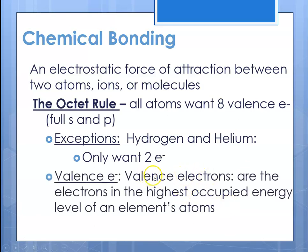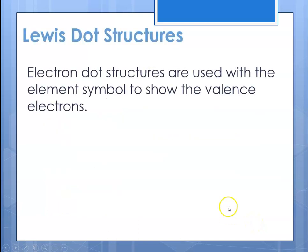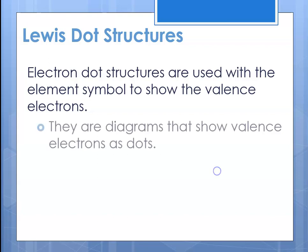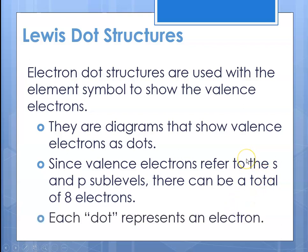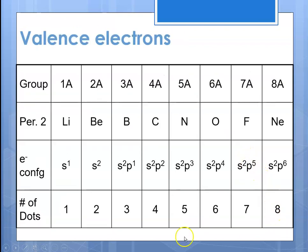We use something called a Lewis dot structure — an electron dot structure — to show the number of valence electrons. They are diagrams that show electrons as dots. Since valence electrons refer to just the S and P sublevel, there's a total of eight — you never have more than eight. Here is a chart showing groups 1A through 8A, the S block and the P block, with elements in period two of the periodic table showing their electron configurations from S1, S2, through P1 to P6, and the number of dots from 1 through 8.